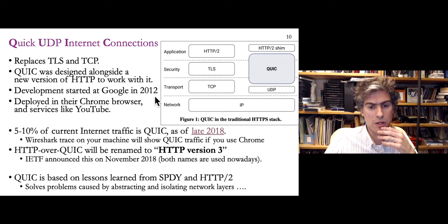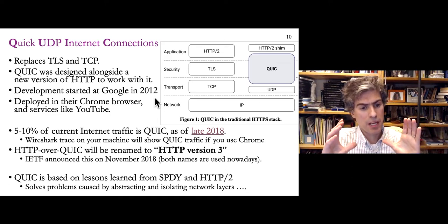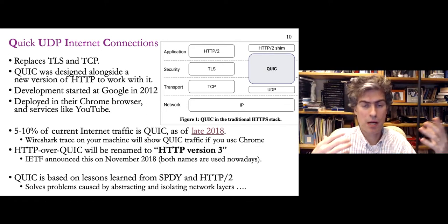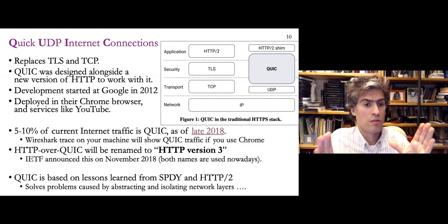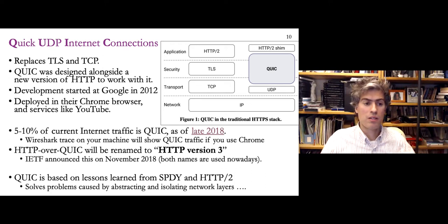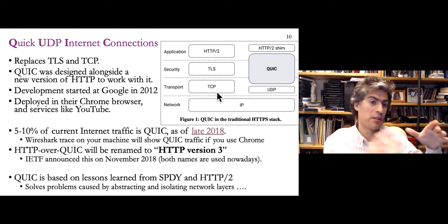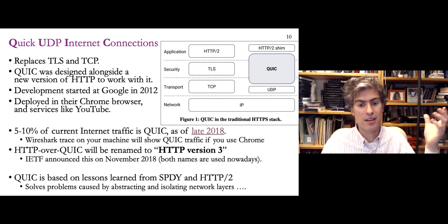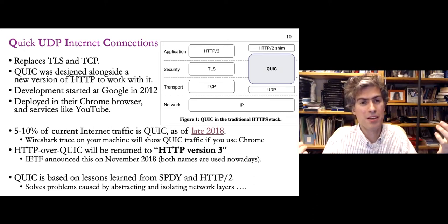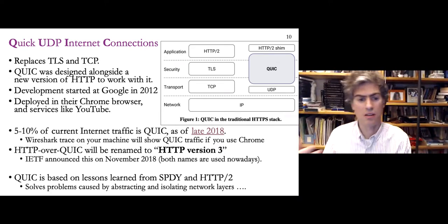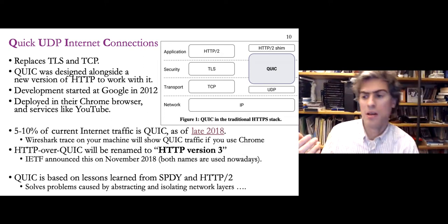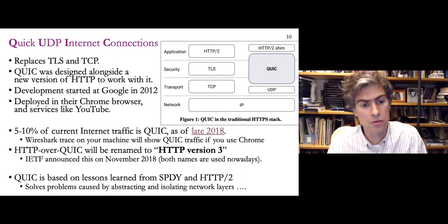QUIC was originally developed by Google starting in 2012. Google is in a unique position because they have their own browser, Chrome, as well as a ton of popular backend services. So if they want to replace TCP and TLS with something else, they can build it into their browser and their servers. Suddenly maybe 50% of internet traffic would start using this new protocol — because of all the Android devices, Chrome browsers on desktops, and traffic going to Google web servers.